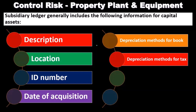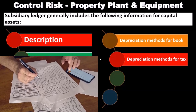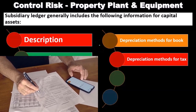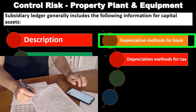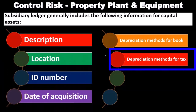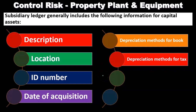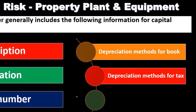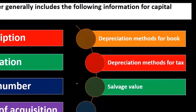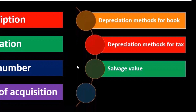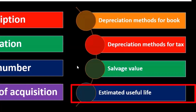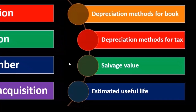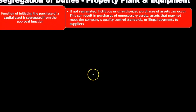Book depreciation follows generally accepted accounting principles, while tax depreciation follows the tax code — which is completely different. We test book depreciation primarily, but we also want to reconcile to the tax depreciation as a verification step, since taxes represent another form of reporting. We can tie out totals by category on both the books and tax returns, then consider salvage value — the estimated residual value at the end of useful life — and estimated useful life, all of which help verify the depreciation calculation.